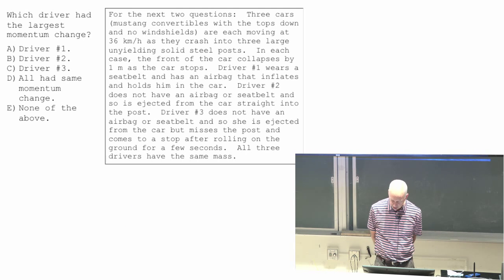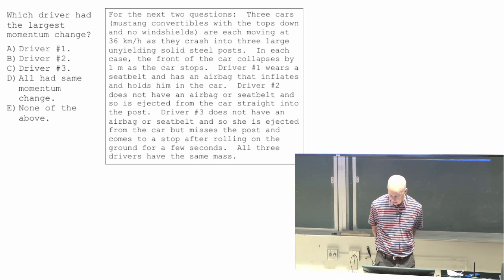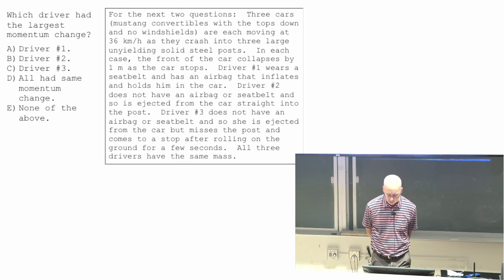In each case, the front of the car collapsed. Driver one wears a seat belt, has an airbag that inflates, holds him in the car. Driver two does not have an airbag or seat belt, and so is ejected from the car straight into the post. Driver three does not have an airbag or seat belt, so she's ejected from the car.